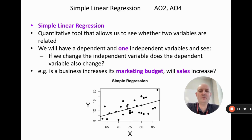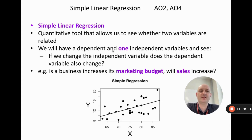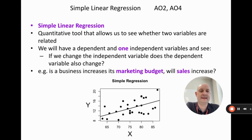We're going to be doing linear relationships, so we're going to be using a linear line as shown here. All relationships are going to be linear in this example. 'Simple' here just means we have one independent variable rather than lots — that would be multiple linear regression, which we're not going to get into.